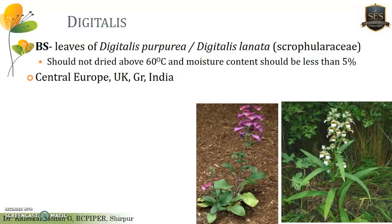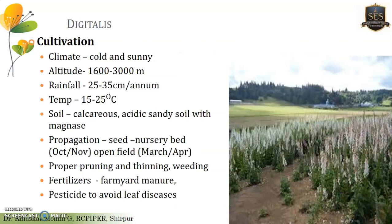Geographically, Digitalis is native to Central Europe, the United Kingdom, Greece, and some parts of India, indicating it requires cool climatic conditions with rainfall throughout the year. The plant grows in cold and sunny climatic conditions at an altitude of 1,600 to 3,000 meters. Rainfall required is 25 to 35 centimeters per annum, distributed throughout the year — not seasonal. Temperature should be an ambient 15 to 25 degrees Celsius. The soil requires rich calcium, that is calcareous acidic sandy soils with manganese content.